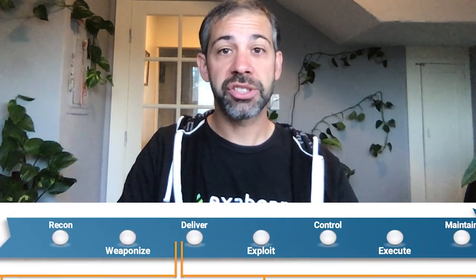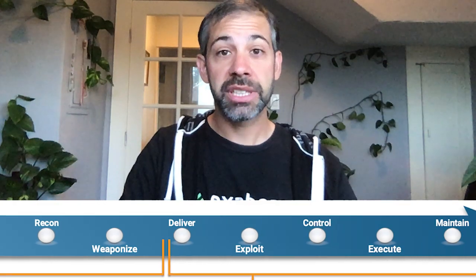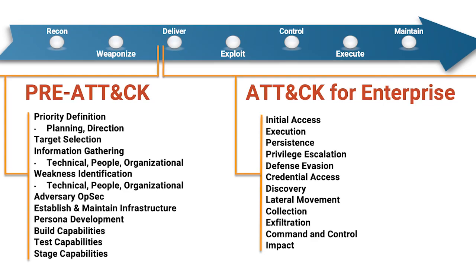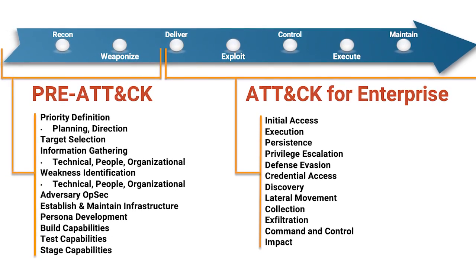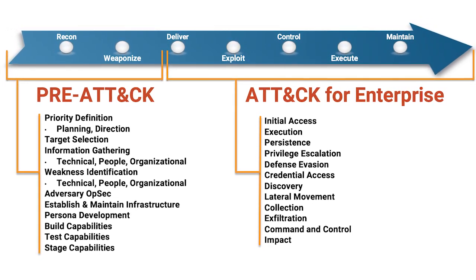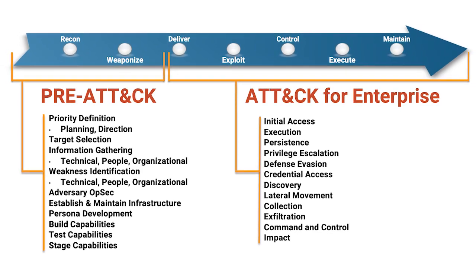Those familiar with the Lockheed Martin Cyber Kill Chain might wonder how it's different. The Cyber Kill Chain lays out a high-level framework: reconnaissance, weaponization, delivery, exploitation, command and control, and actions or execution. It doesn't really get into the specific details of tactics or techniques. What you see in this picture is how ATT&CK and something called PRE-ATT&CK tuck nicely under the Cyber Kill Chain.